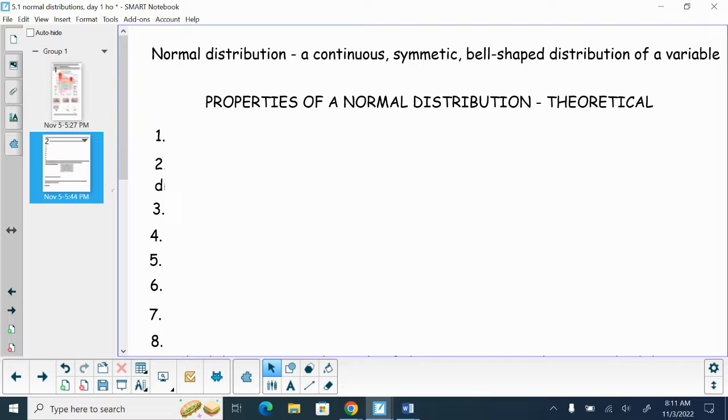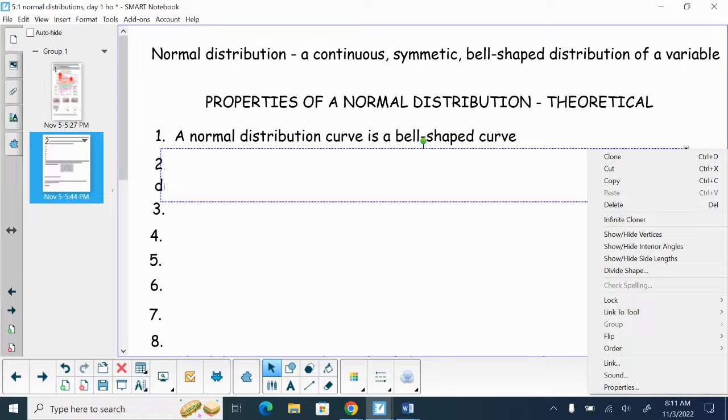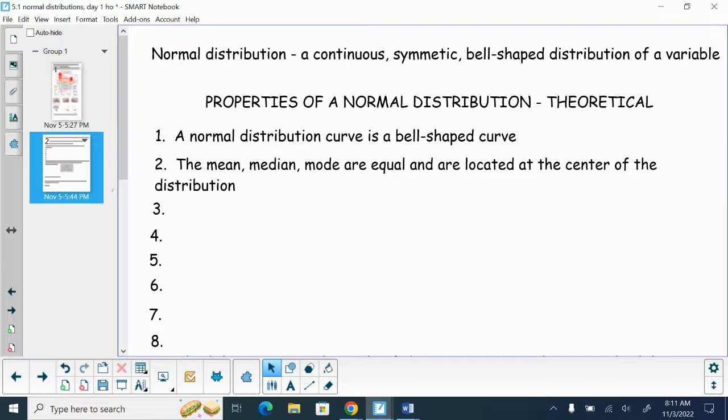Properties of a normal distribution. Normal distribution is a bell-shaped curve. You have a bell-shaped curve. The mean, median, and mode are in the middle. It tails off on both sides. Like a pilgrim's hat. And you're going to be responsible for giving me a couple of these characteristics. The mean, median, mode are equal and located at the center of the distribution. The mean, median, and mode are equal and located at the center of the distribution.